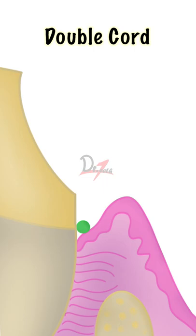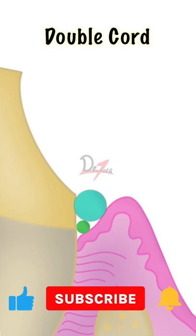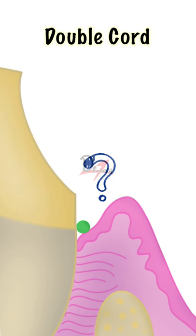Now in the double cord technique we first use a thin cord into the sulcus and on top of this cord a wider diameter cord is placed. And while making the impression only the larger cord is removed, not the smaller one.